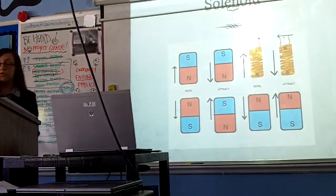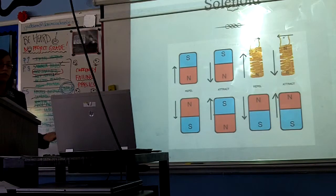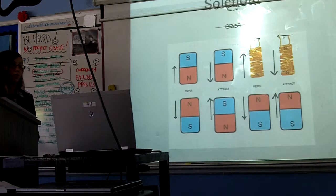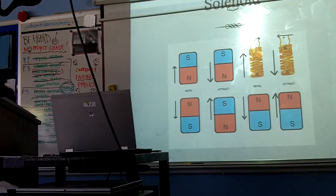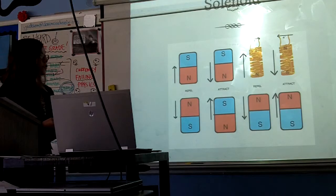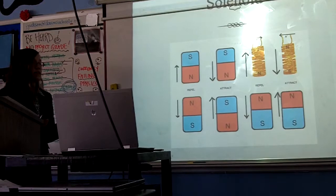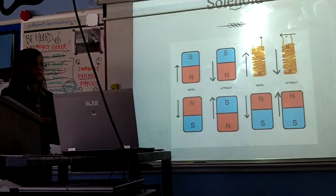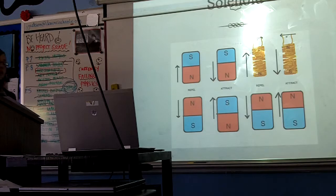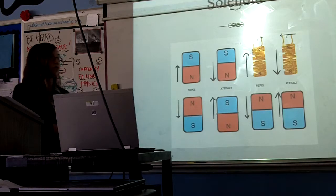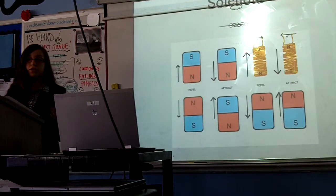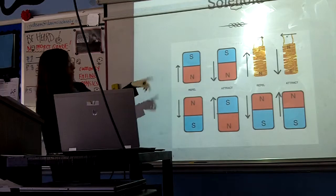This current transforms the solenoid itself into a magnet of sorts, and it has its own magnetic field and magnetic poles. The alternating current switches the poles of the solenoid so that it alternately attracts and repels the magnetic field of the permanent magnet that sits inside the speaker.